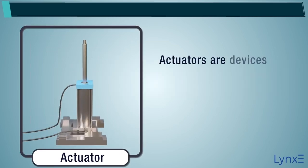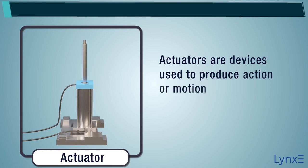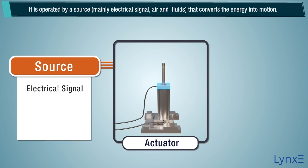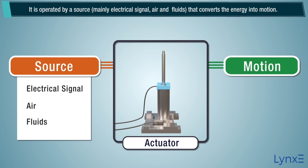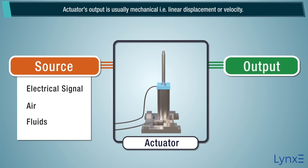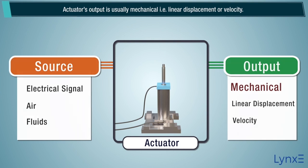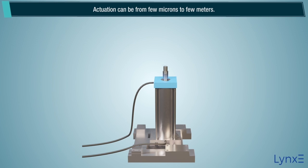Actuators are devices used to produce action or motion. They are operated by a source, mainly electrical signal, air, and fluids, that converts the energy into motion. Actuators' output is usually mechanical, i.e., linear displacement or velocity. Actuation can range from few microns to few meters.